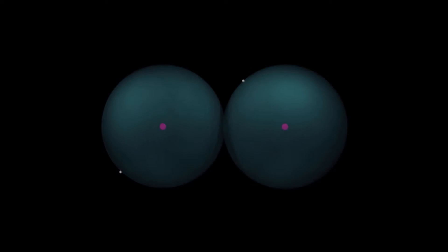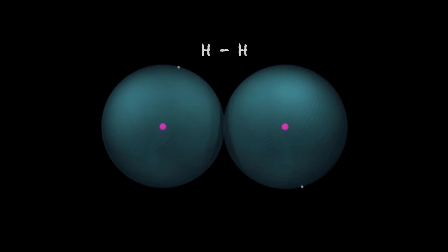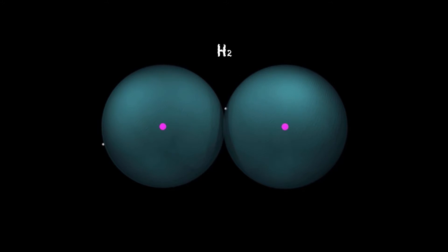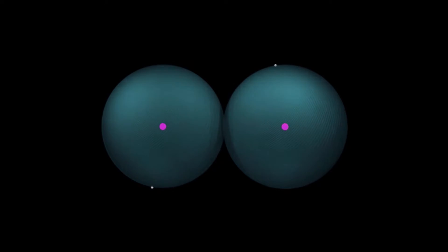On Earth, hydrogen can exist as a gas. In its molecule, two atoms come together and share their two electrons. Hydrogen gas, H2, makes up a tiny fraction of Earth's atmosphere. It is extremely light and can escape Earth's gravity into outer space.